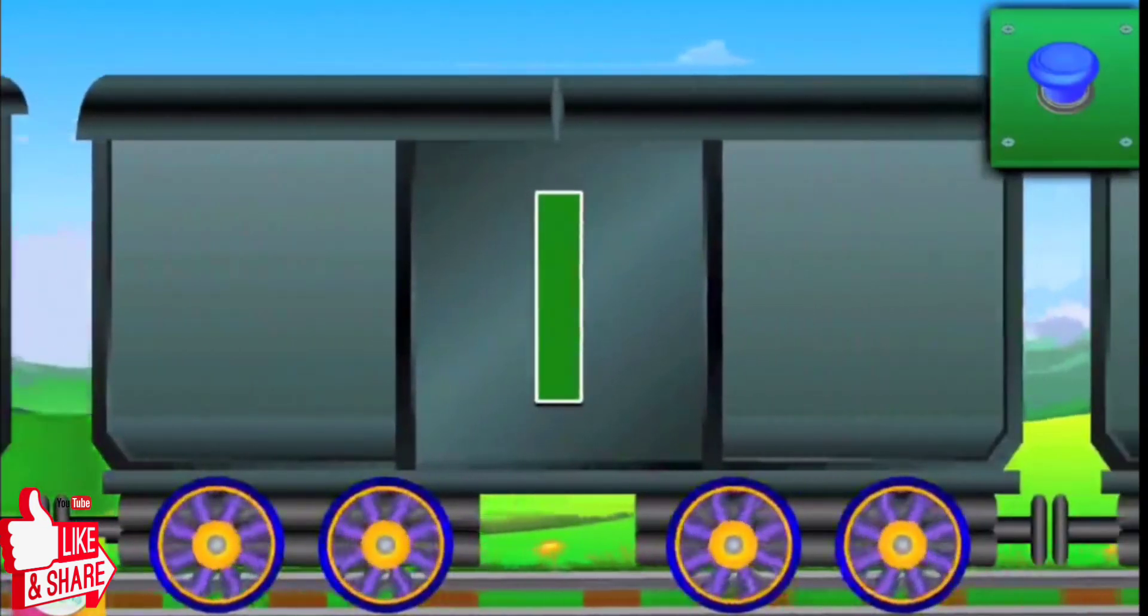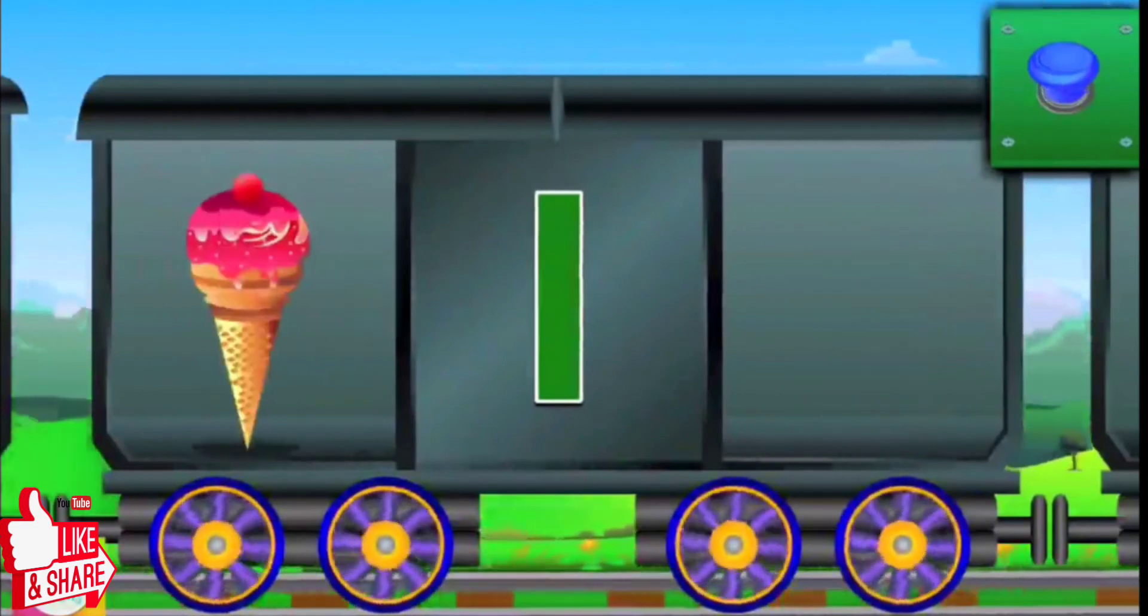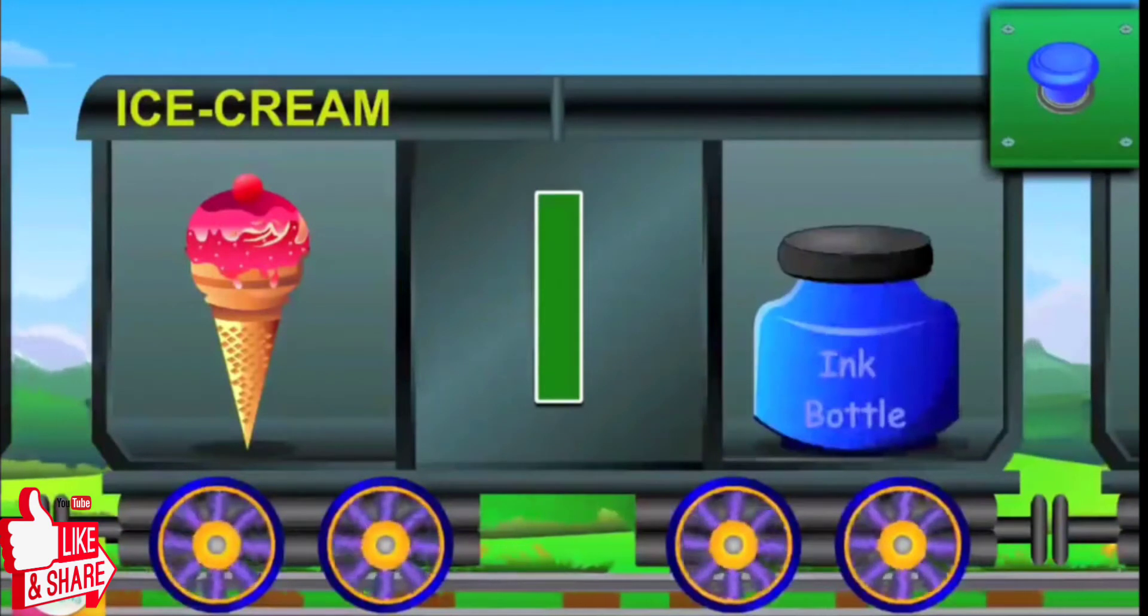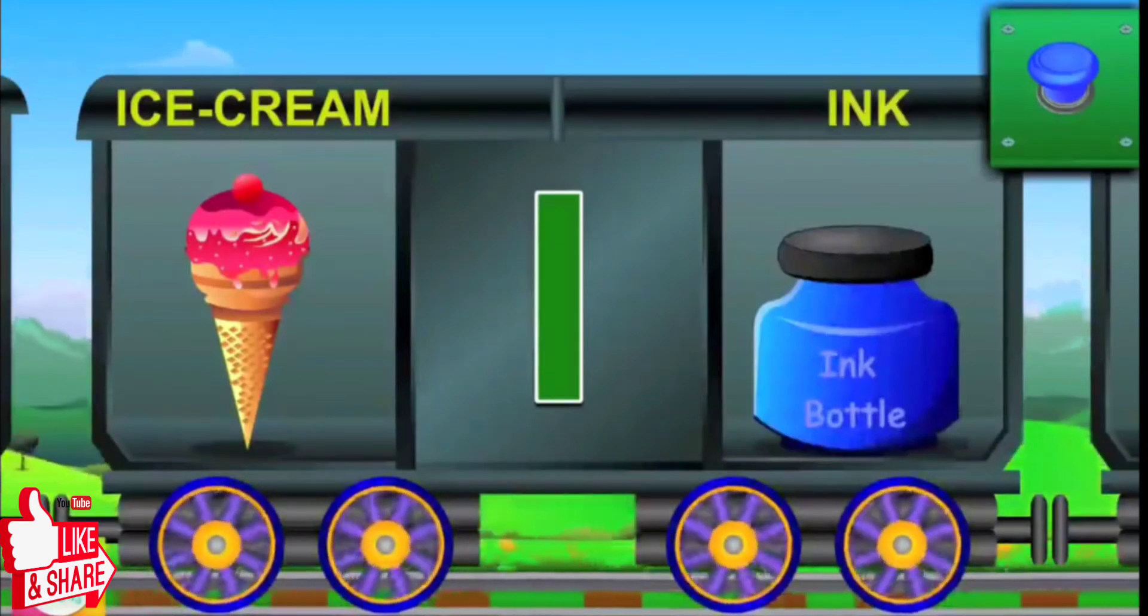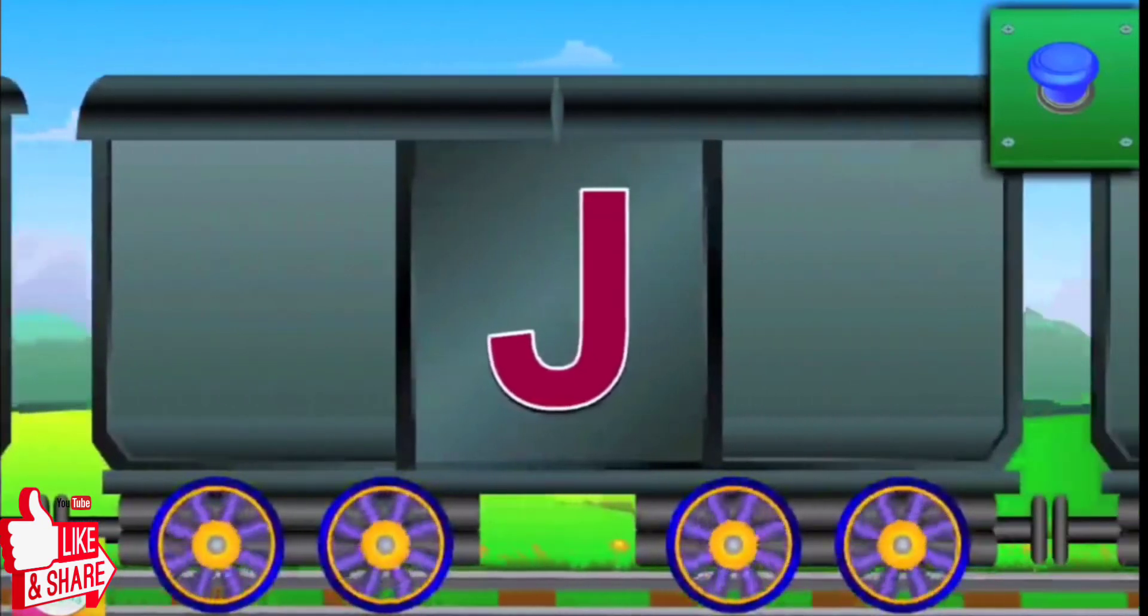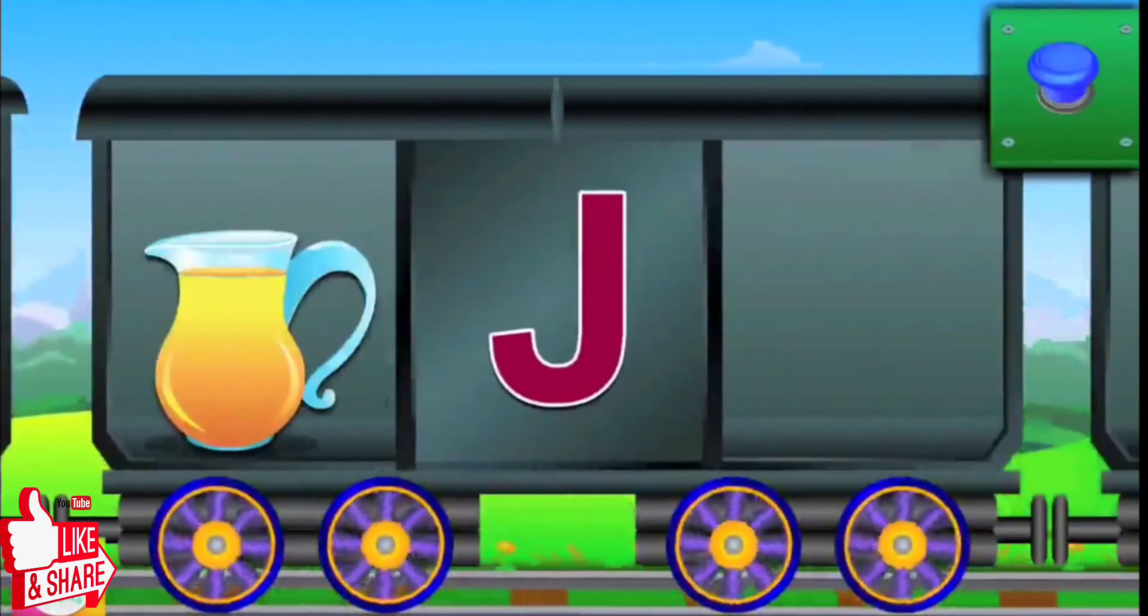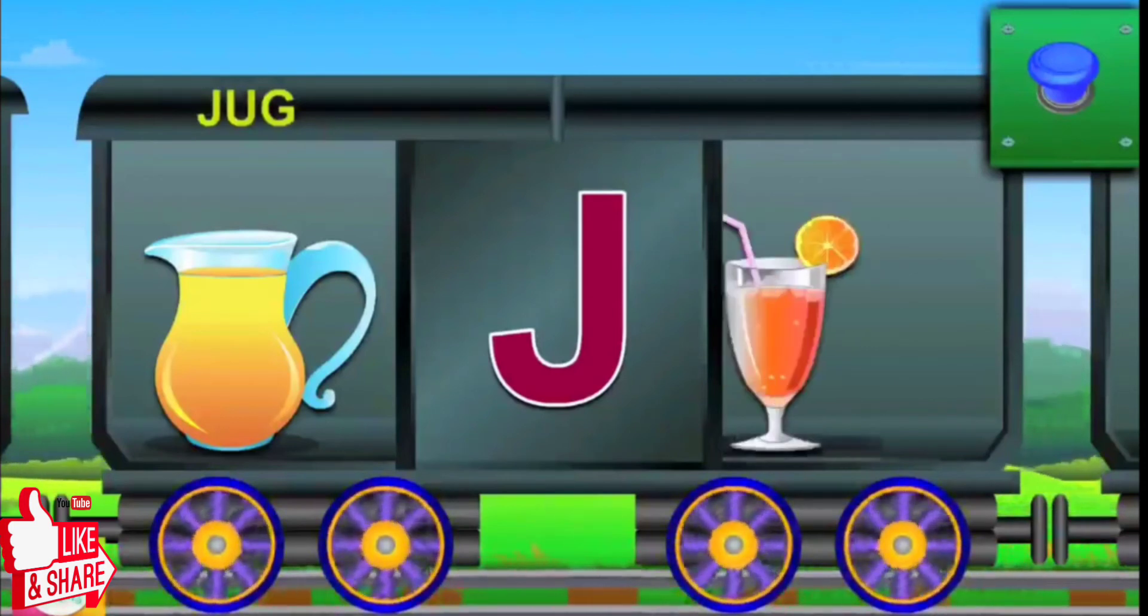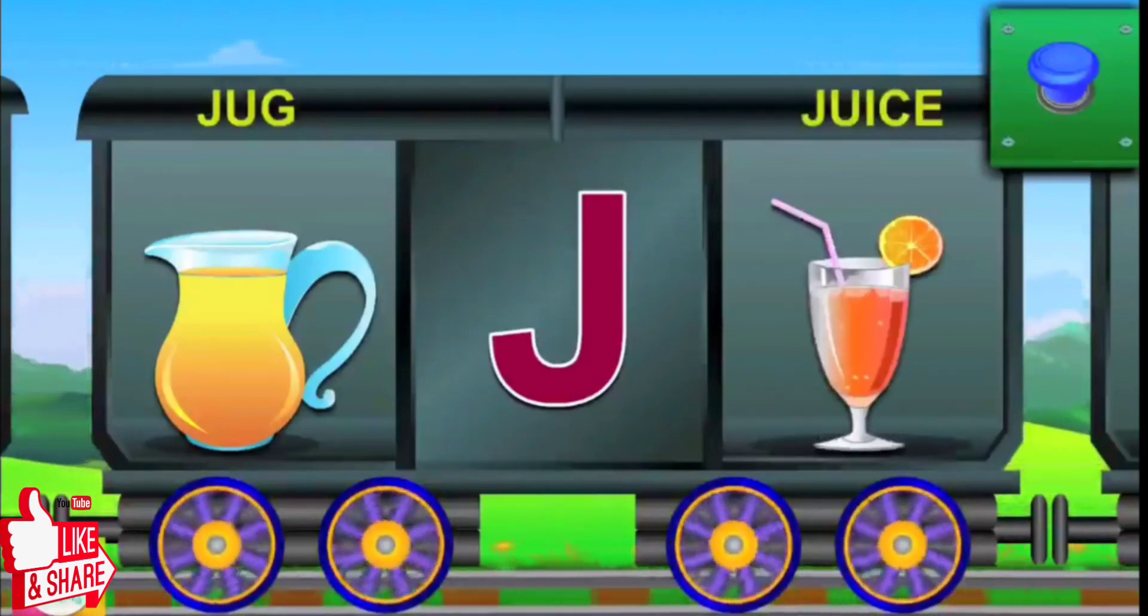Here is I. I for ice cream, and ice cream is yummy. I for ink, and ink is blue. Now J. J for jug, and the jug is full. J for juice, and the juice is cool.